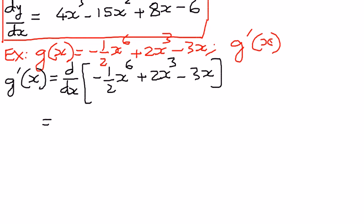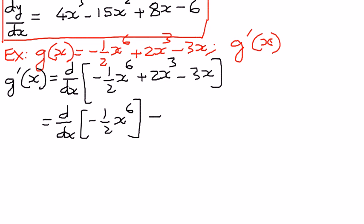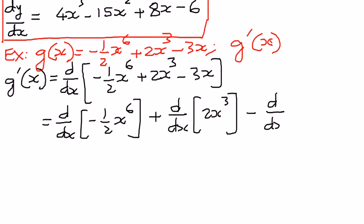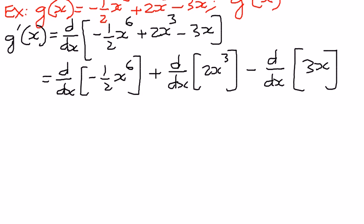The derivative of this function with respect to x — we can write it out as d by dx of negative one half x to the power of 6 plus 2x to the power of 3 minus 3x. We can apply the differentiation to each one of these functions inside the brackets separately, and now we are ready to apply the differentiation.